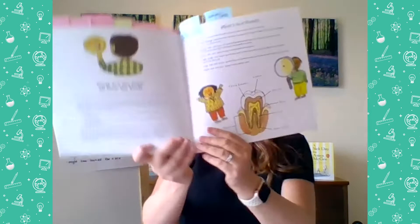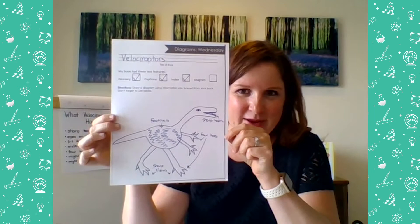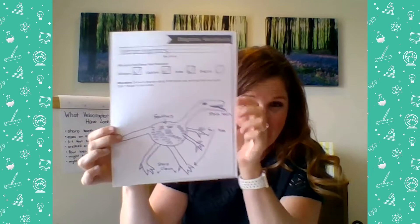We're going to make our own text feature! Remember when we read 'Throw Your Tooth on the Roof' last week? We looked at a diagram — a special picture that teaches and has labels. This velociraptor book doesn't have a diagram, so I drew one myself. Keep in mind I'm a teacher, not an artist, but I did my very best! In my diagram I labeled: feathers, sharp claws, four toes, and sharp teeth — remember, 80 sharp teeth! A diagram is another really helpful text feature.